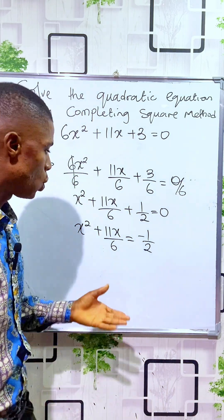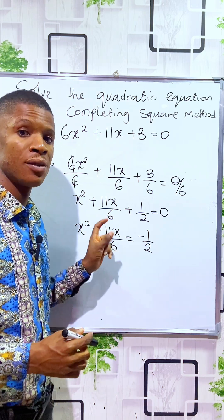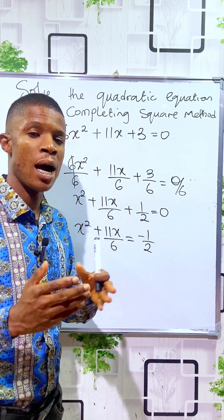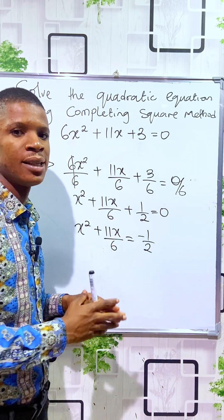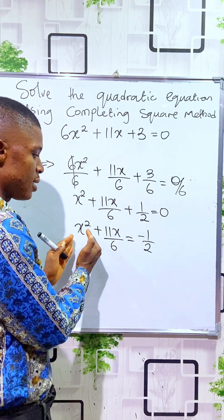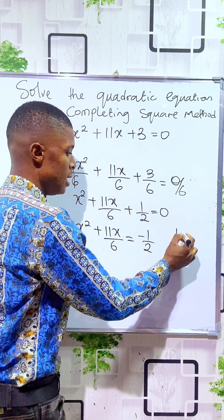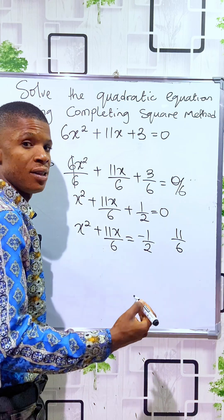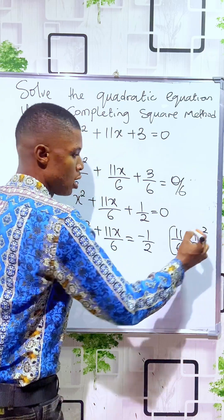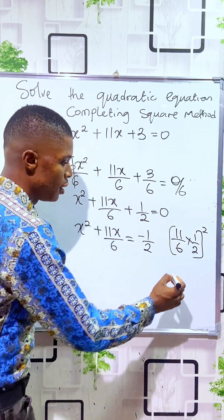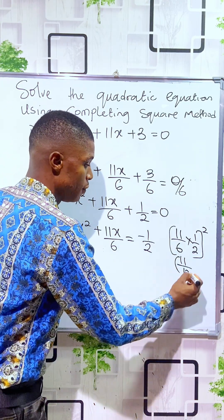The next stage is to handle the middle term, which is a bit tricky. What we have to do is take the coefficient of x, divide it by 2, and square whatever we get. The reason we do this is to make the left-hand side a perfect quadratic expression. The coefficient of x here is 11/6, so we divide it by 2 — which is multiplying by 1/2 — then square the result. 11 times 1 is 11, and 6 times 2 is 12, giving us (11/12) all squared.